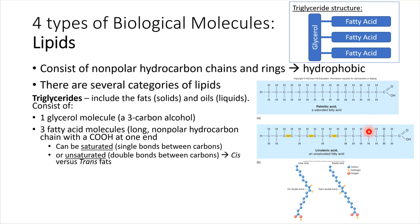If you compare that with the structure below, we have some double bonds that show up in this chain. Consequently, there's a potential for these carbons to form even more bonds — they could take on more hydrogens. So this structure we would say is unsaturated; it has not been saturated with hydrogens yet.